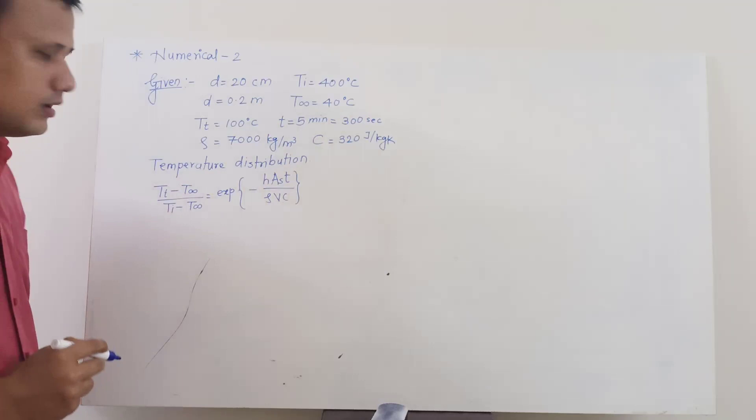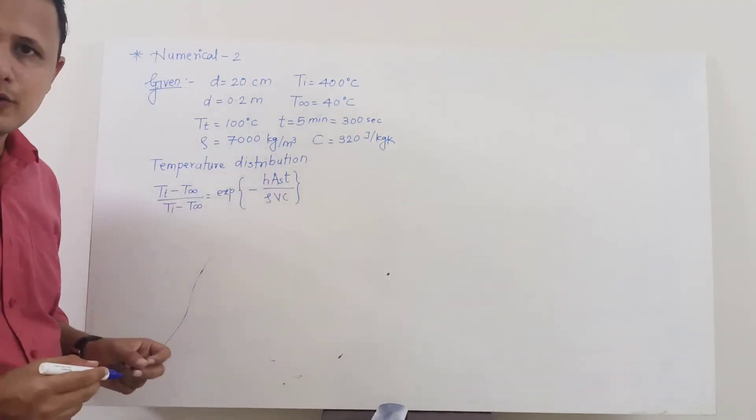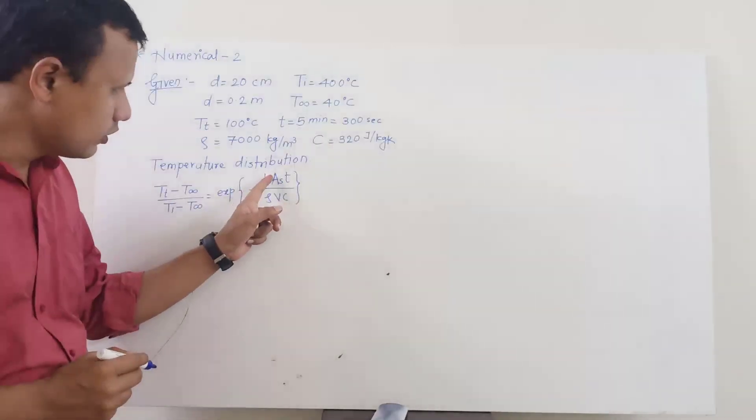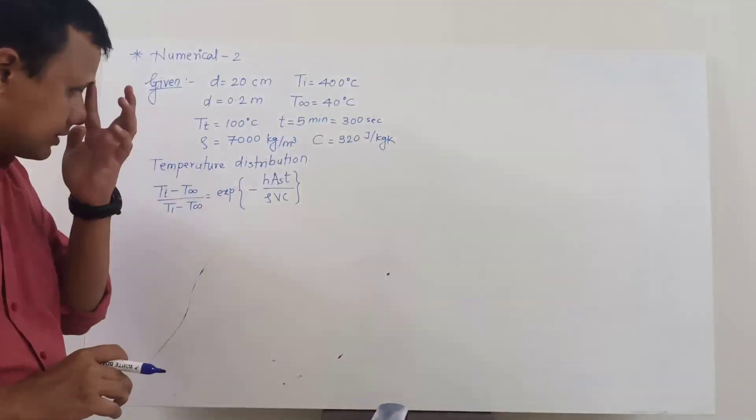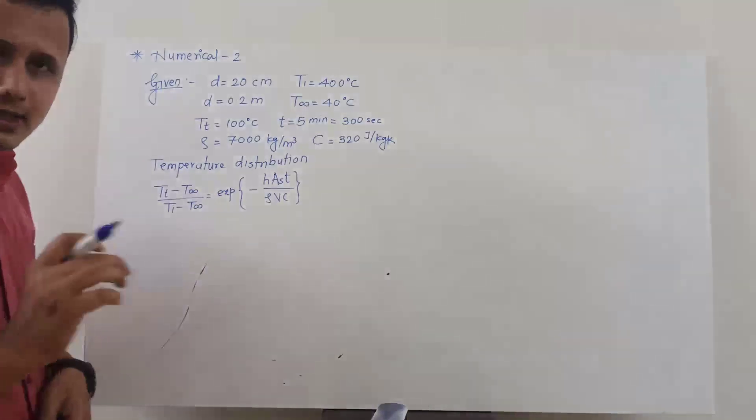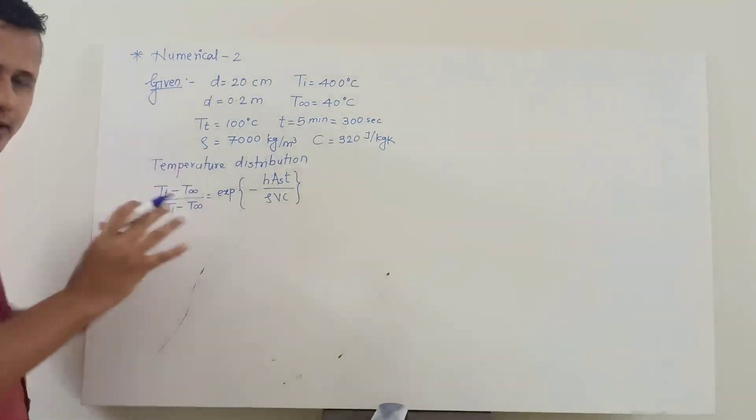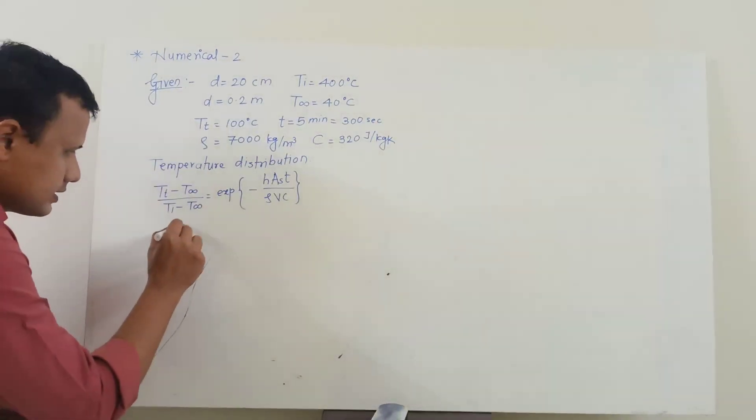Now we can substitute the values but before that we will try to find out the value of A_s upon V. We don't need to calculate these two values separately, we can combine them to find out a single quantity because it is a spherical ball.